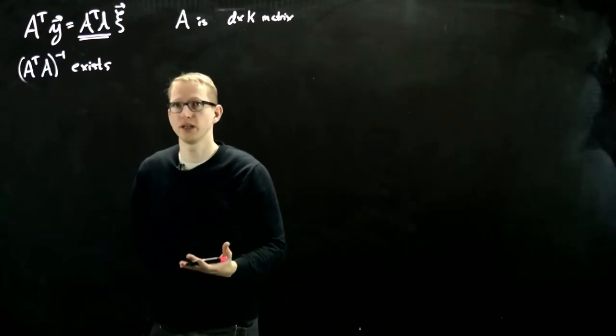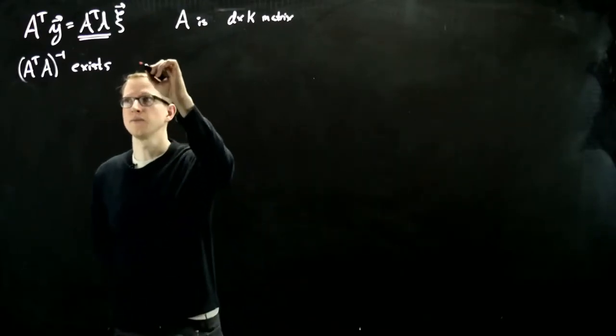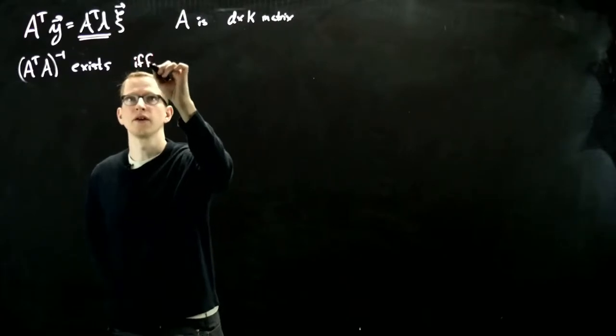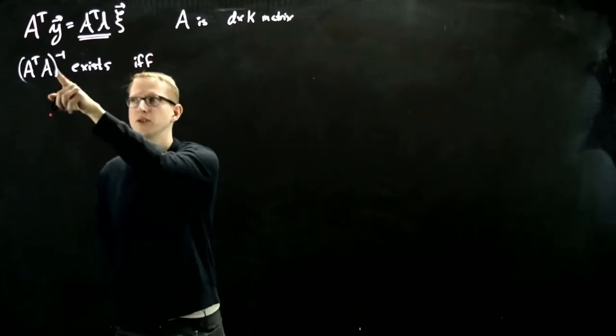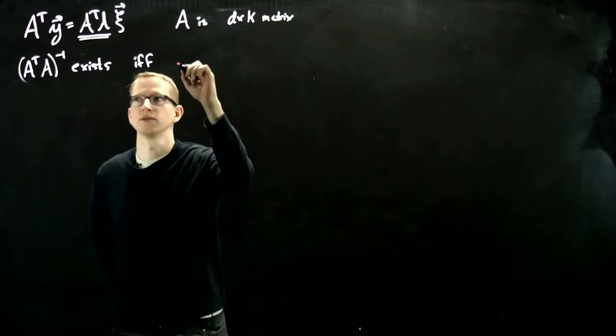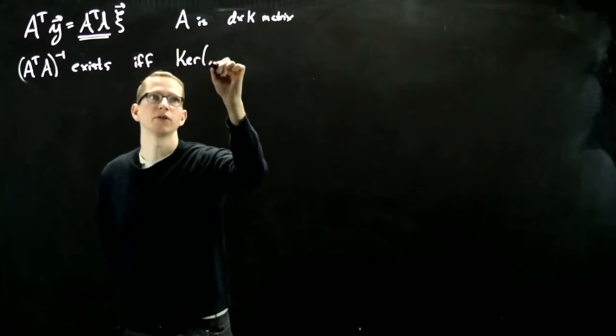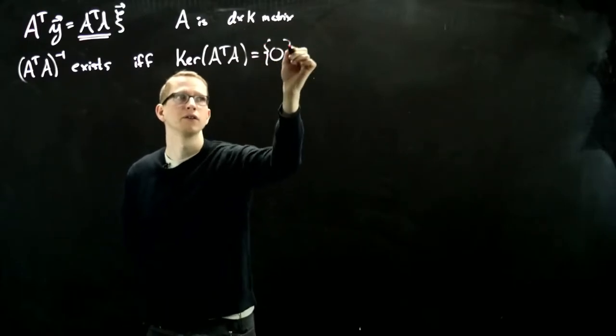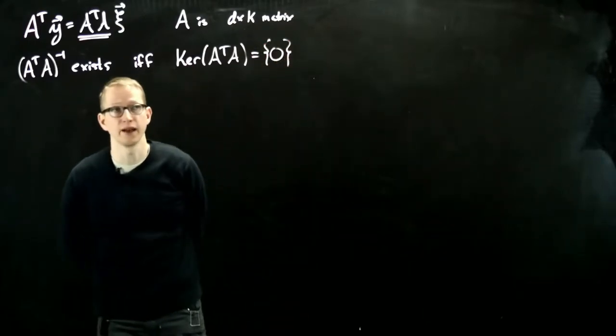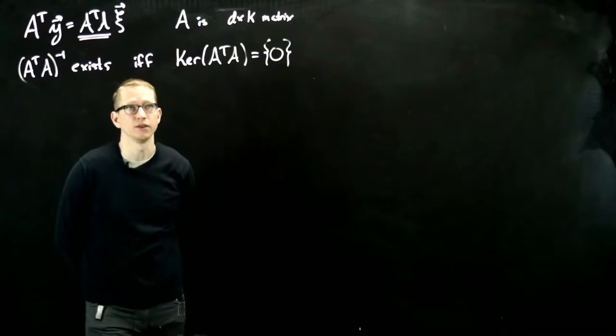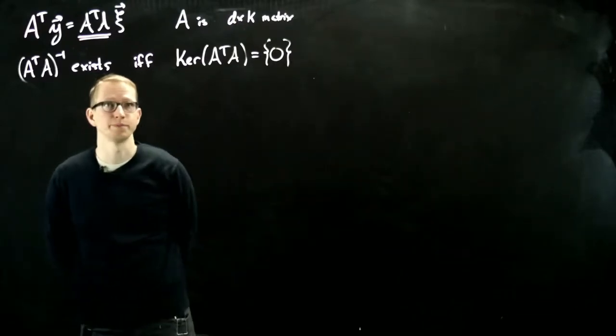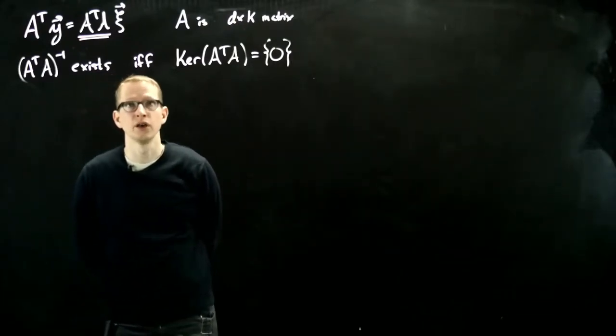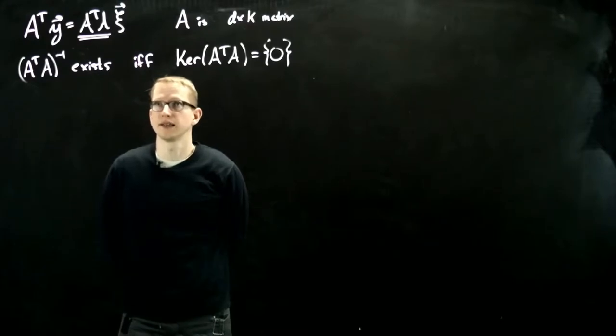So one of the situations when this exists is when the kernel of this matrix vanishes. That's one of the criteria. So 0 as a vector subspace of RK. So when does something like this happen?